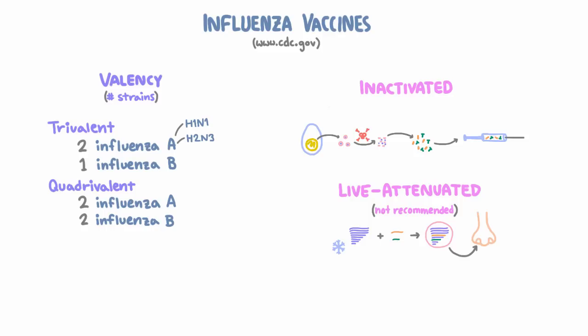So why isn't this vaccine recommended? Because it has shown decreased efficacy for the past few seasons. Another disadvantage is that since the attenuated virus can still infect cells, although it's generally safe for immunocompetent hosts, it should not be given to immunosuppressed patients who could be at risk for an illness caused by the vaccine virus.